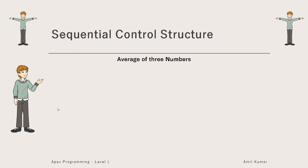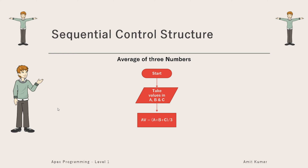This is the first flowchart for calculating the average of three numbers. We start, take values in variables a, b, and c, add them up, divide the total sum by three, and store it in the variable AV. Finally, we show AV which represents the average, and stop the flowchart.